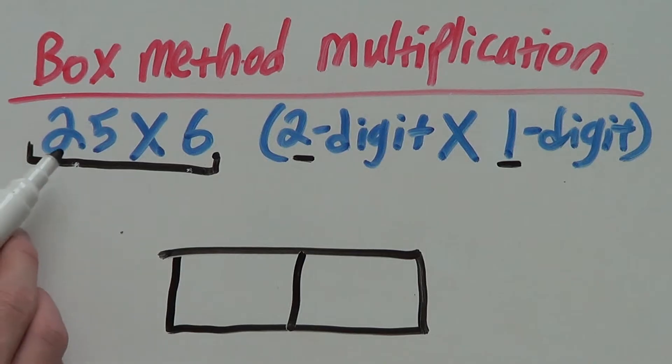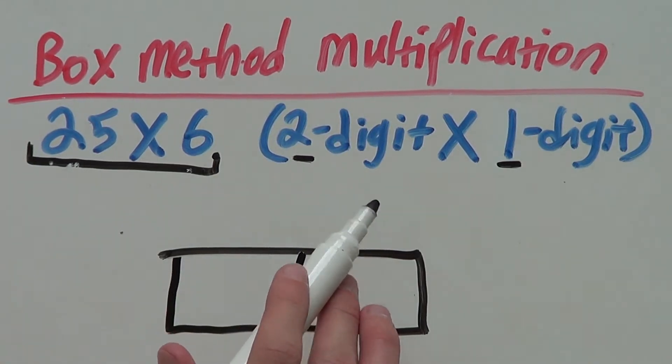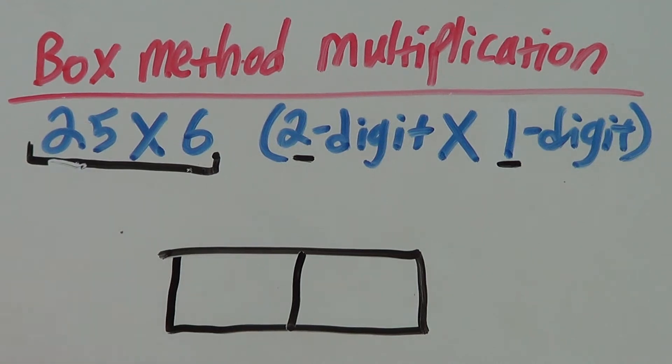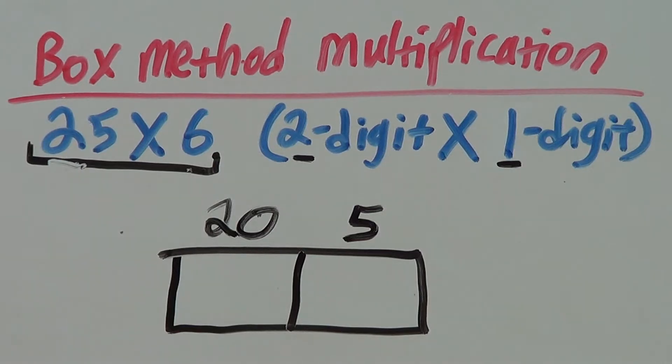We'll obviously place the 25 on the top since it's 2 digits and we have to break this 25 up into 20 and 5 because 20 and 5 makes 25 but 20 is the tens place and 5 is the ones place. Then, over here, we can put our 6 and now we have our box all set up ready to go.